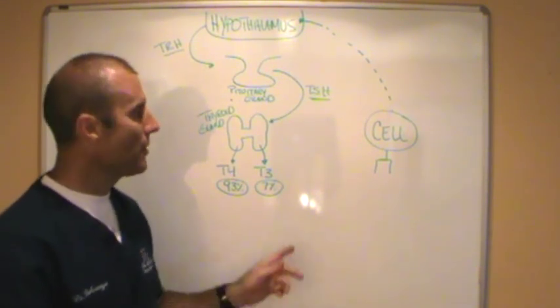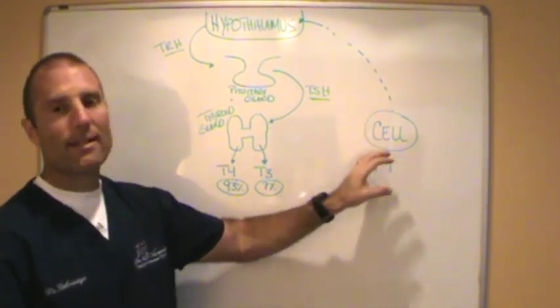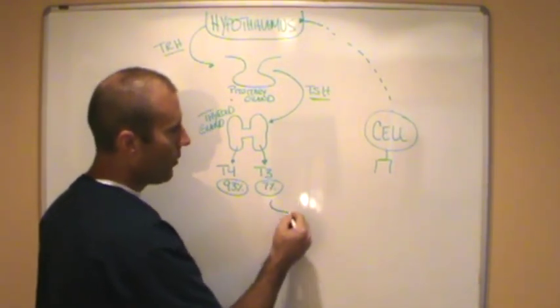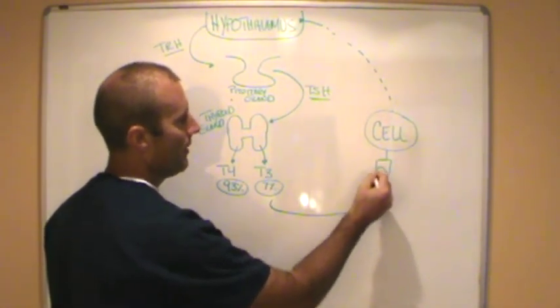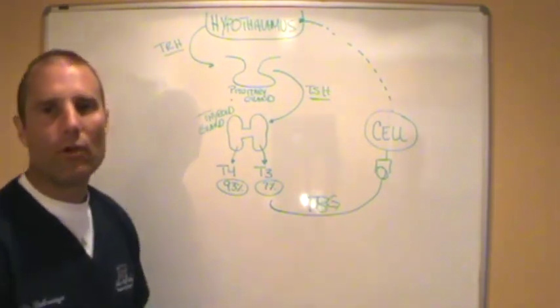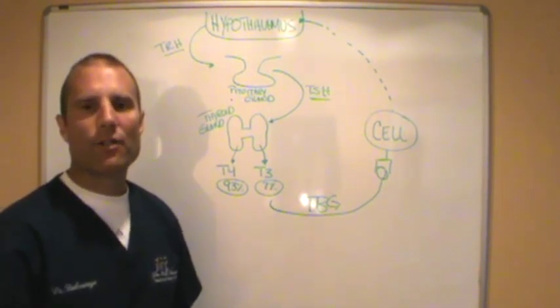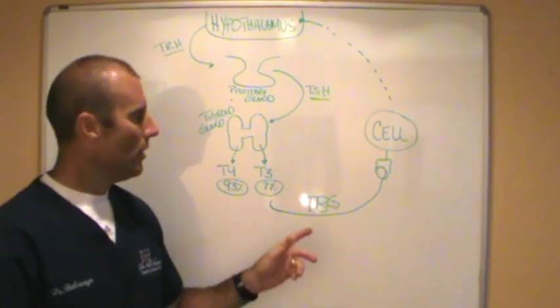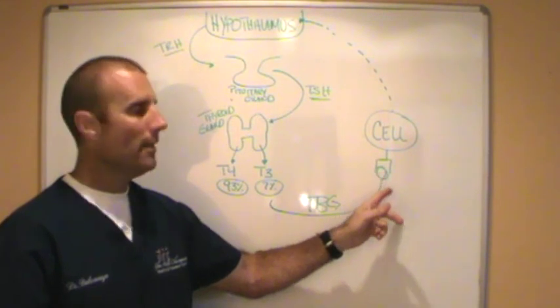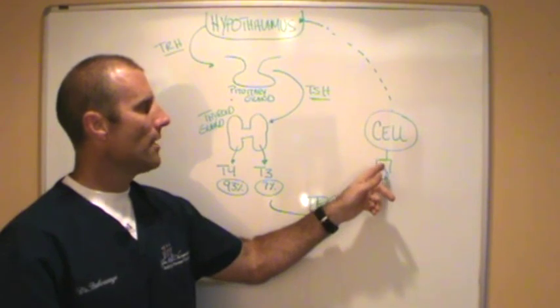It is T3 that actually goes to the cells, binds to the receptor sites and then gets into the cells to run metabolism. This free T3 created by the thyroid can go right to the receptor site, but it has to get there by a protein called thyroid binding globulin. Thyroid binding globulin binds to the T3, carries it like an escort or a taxi cab off to the cells of the body so that T3 can be released and become free T3, bind to the receptor, get into the cell and we have healthy metabolism.